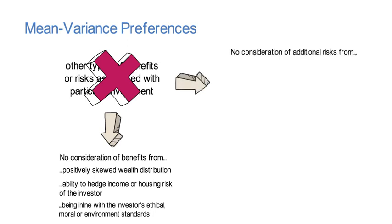Likewise, additional risks such as negatively skewed future wealth or fat tails in the wealth distribution or the inability to hedge personal risk or the violation of personal moral standards are not considered in these mean-variance preferences.